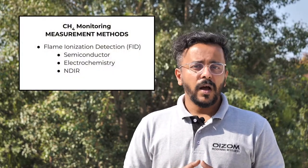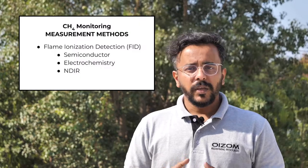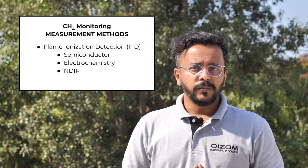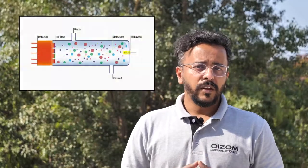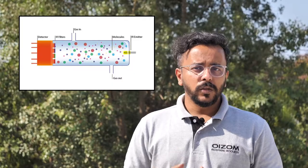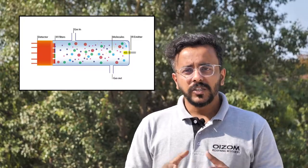Methane monitoring is an efficient way to detect the buildup of methane levels and take necessary actions. Different working principles for methane monitoring in the ambient environment are flame ionization detection, semiconductor, electrochemistry and non-dispersive infrared absorption. At Oizom, our methane sensor works on the principle of NDIR, where the infrared radiation of a specific frequency is absorbed by the methane molecules present in the gas sample and measured by the detector.